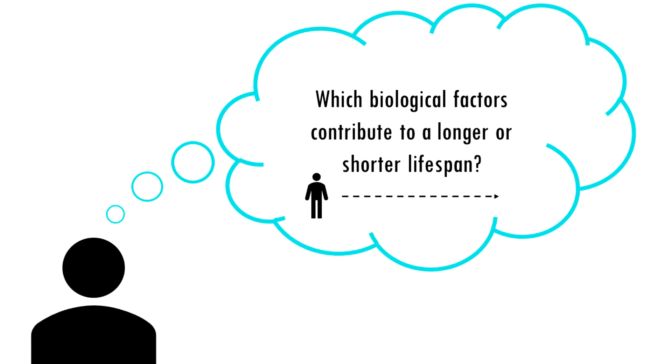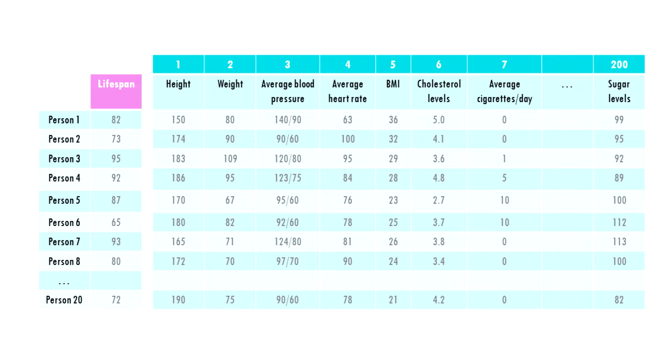Imagine you want to study aging and find out what factors contribute to a longer or shorter lifespan. You start with a data set that looks like this. Let's say you have data from 20 people and the age when they passed away. And we have many factors like their height, weight, sex, if they smoked or not, about their diet. We have 200 factors.